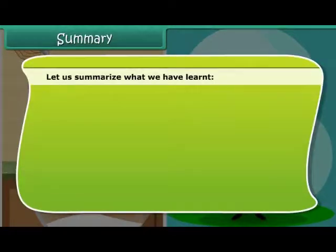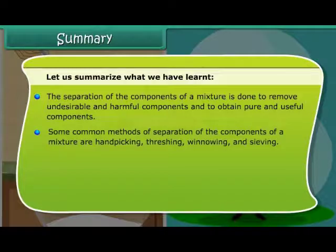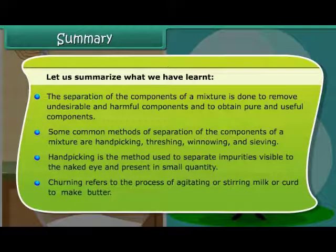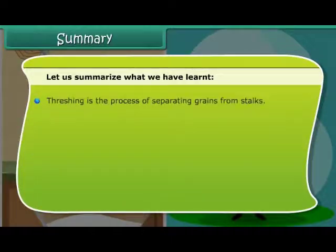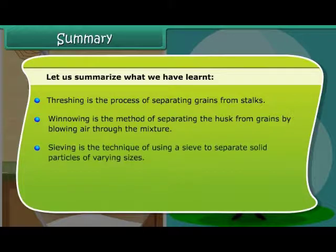Let us summarize what we have learnt. The separation of the components of a mixture is done to remove undesirable and harmful components and to obtain pure and useful components. Some common methods of separation are hand-picking, threshing, winnowing and sieving. Hand-picking is the method used to separate impurities visible to the naked eye and present in small quantity. Churning refers to the process of agitating or stirring milk or curd to make butter. Threshing is the process of separating grains from stalks. Winnowing is the method of separating the husk from grains by allowing air through the mixture. Sieving is the technique of using a sieve to separate solid particles of varying sizes.